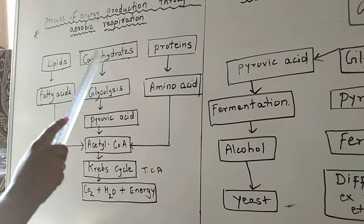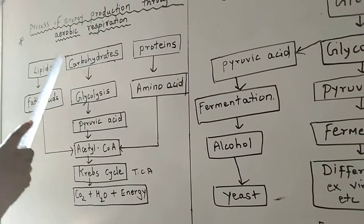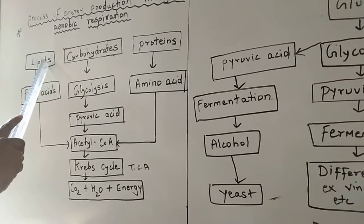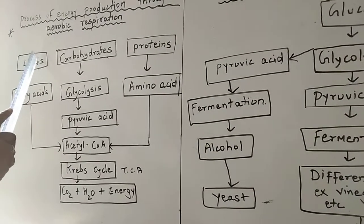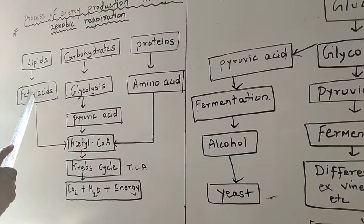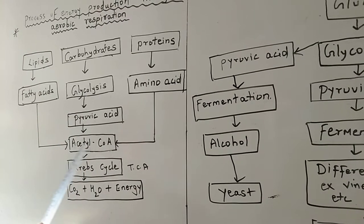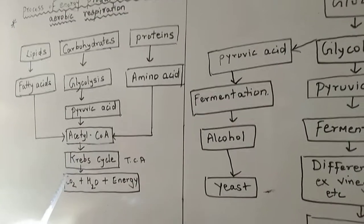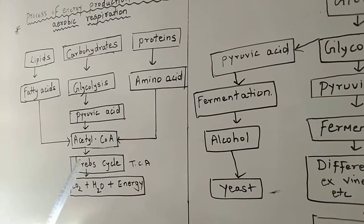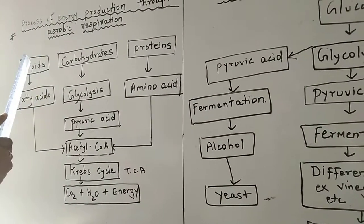Now if carbohydrates are not present in our diet, then in that case our body utilizes lipids for production of energy. Lipids means fats. These fats are converted to fatty acids, and these fatty acids get converted to acetyl coenzyme. And from this acetyl coenzyme, again we can get carbon dioxide, water and energy with the help of Krebs cycle.